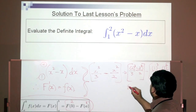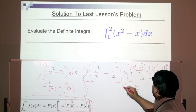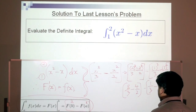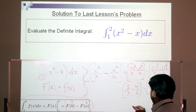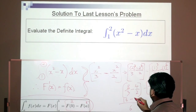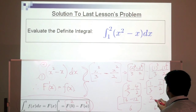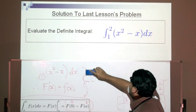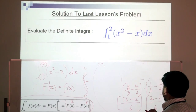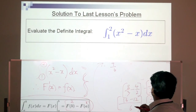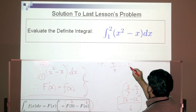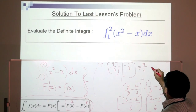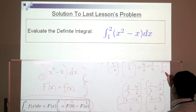That gives us 8 over 3 minus 4 over 2, minus 1 over 3 minus 1 over 2. Converting to a common denominator of 6: 16 over 6 minus 12 over 6, minus negative 1 over 6. So we get 4 over 6 plus 1 over 6.